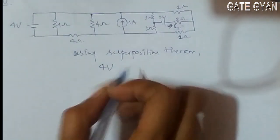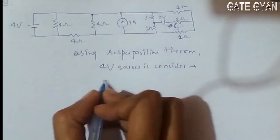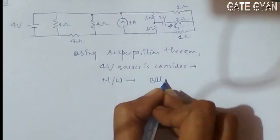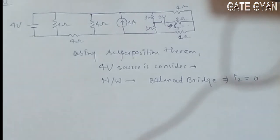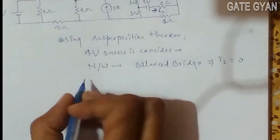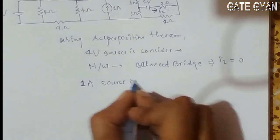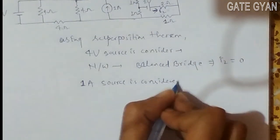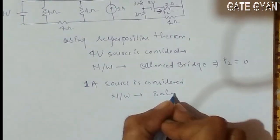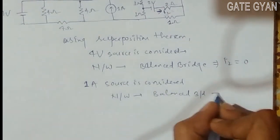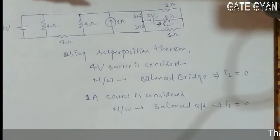When the four volt source is considered, the network becomes a balanced bridge, implying i2 will be 0. Similarly, when the one ampere current source is considered, the network will again be balanced, so i2 will be 0 again.